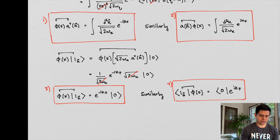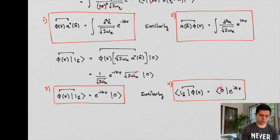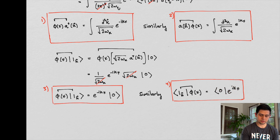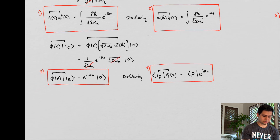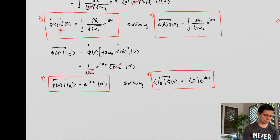Similarly, we can find that when we contract a bra vector with the field again, we get the zero-particle state multiplied by this corresponding factor. So we've now established these four contractions.